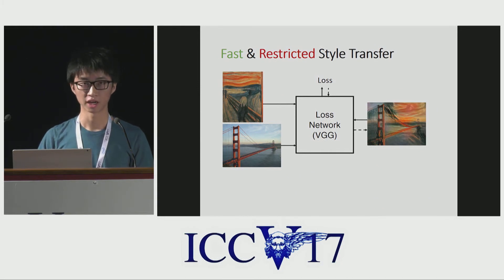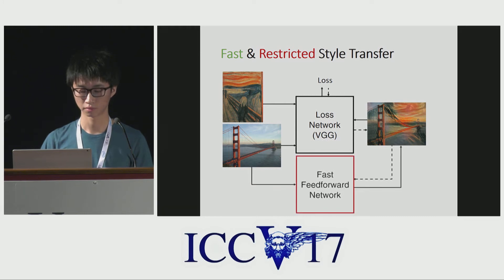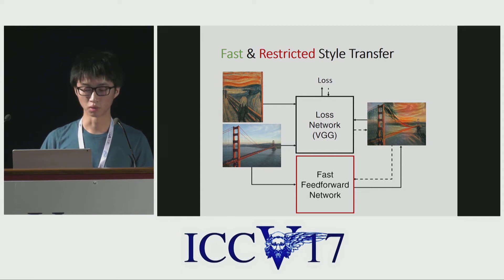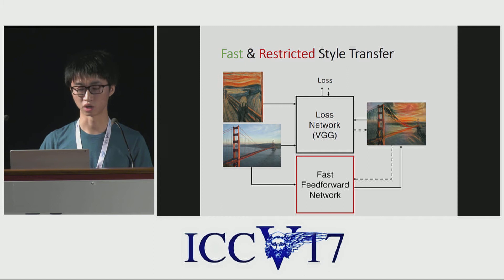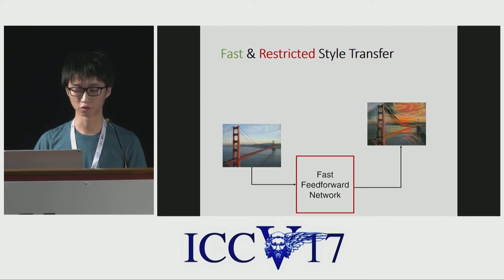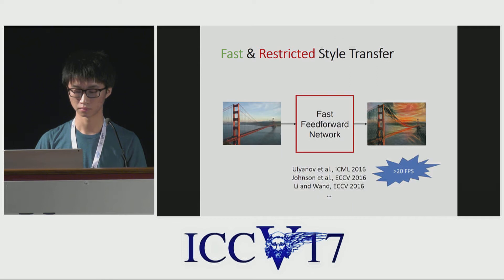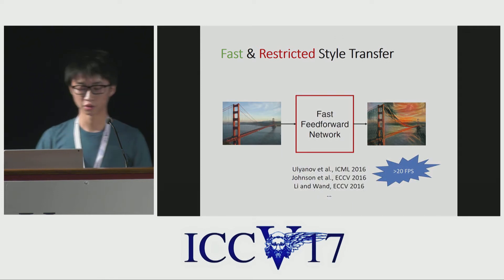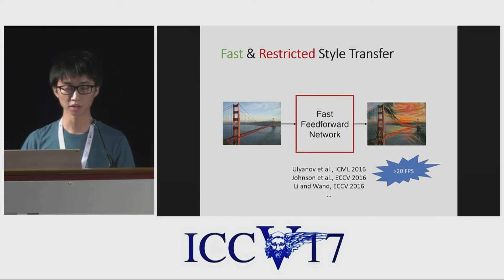The second type of method aims at speeding up style transfer. It replaces the slow optimization with a fast feedforward network. The network is trained to minimize the same loss function but is much faster than the optimization process. Once the network is trained, it can perform style transfer very efficiently with a single forward pass. This method brings huge improvement in speed. However, it sacrifices flexibility because the network is restricted to the particular style it was trained on.